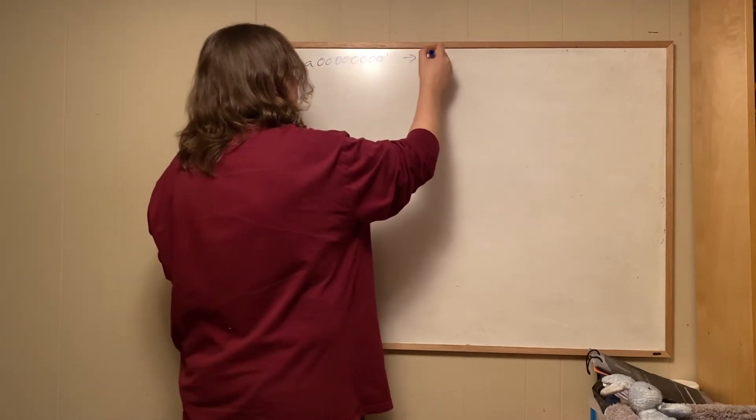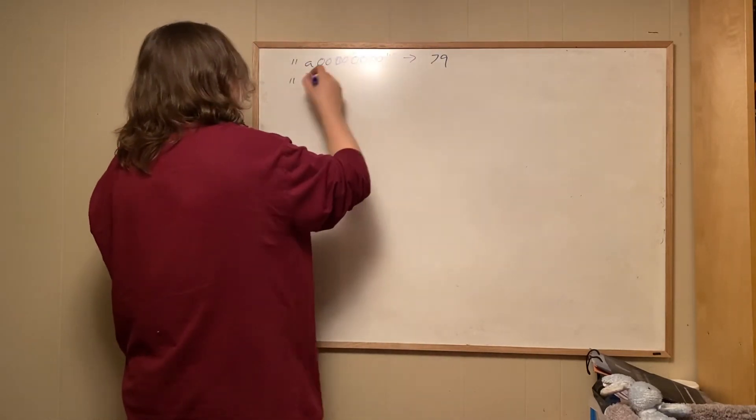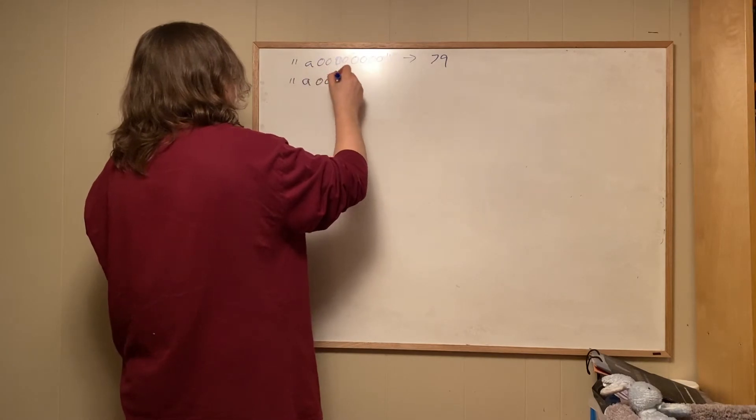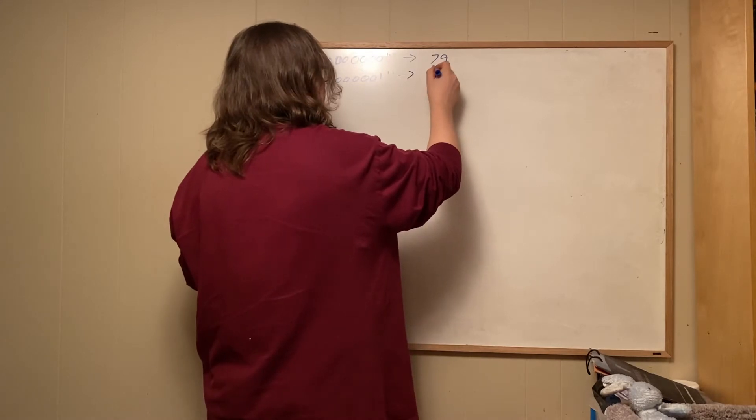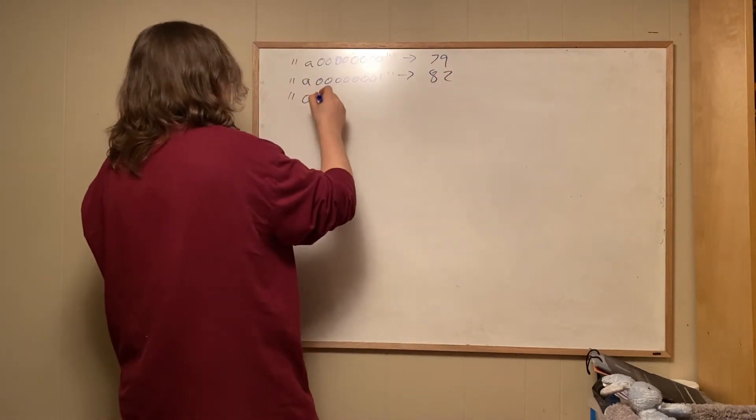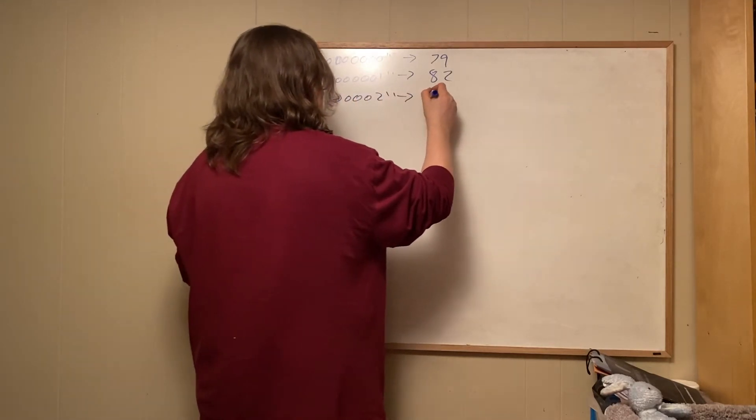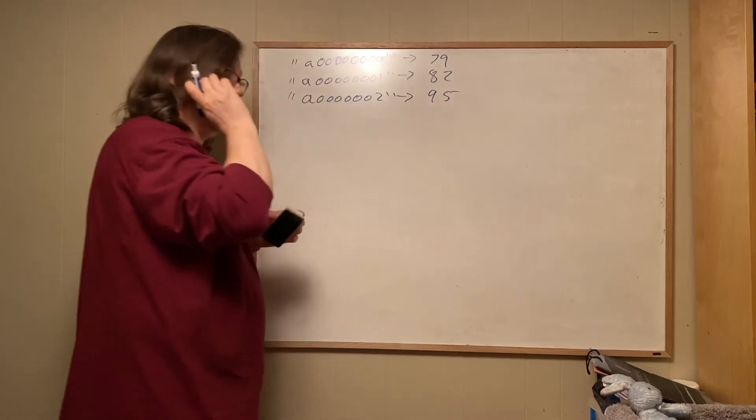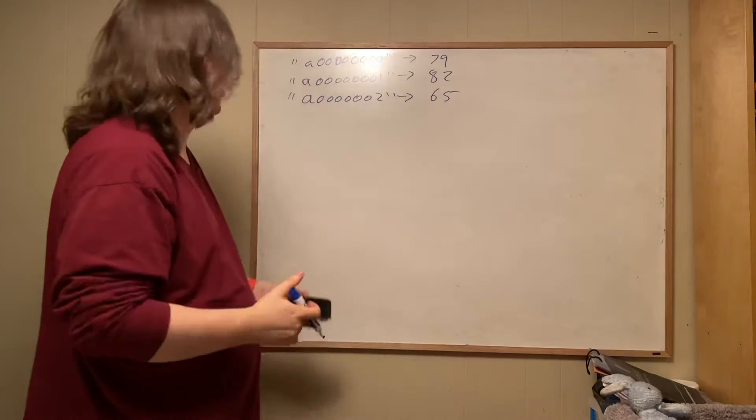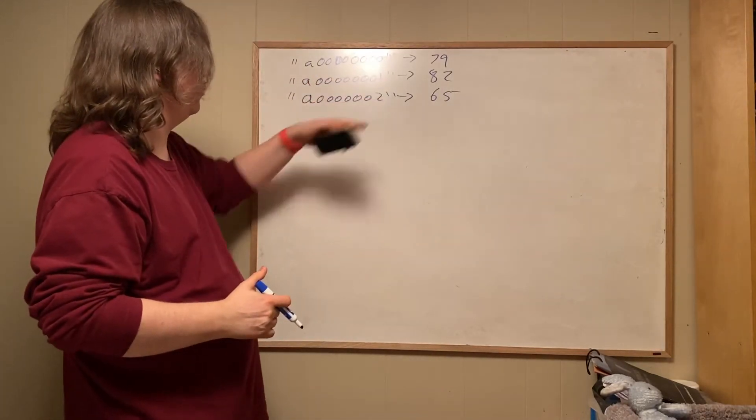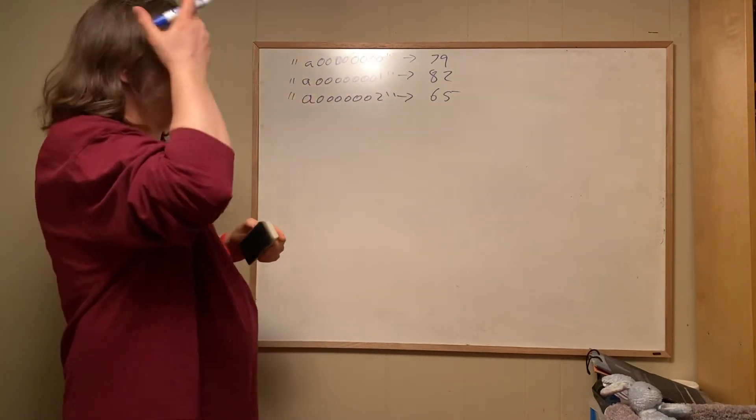So there's a student number and their grade is 79. Another student number and the grade is 82. And one more student number. The higher your student number... Okay, we won't do that. Not the higher the student number, the higher the grade. So there's three numbers, 0, 1, and 2. We'll just arbitrarily say this hashes to 0, this hashes to 1, this hashes to 2. It doesn't really matter.